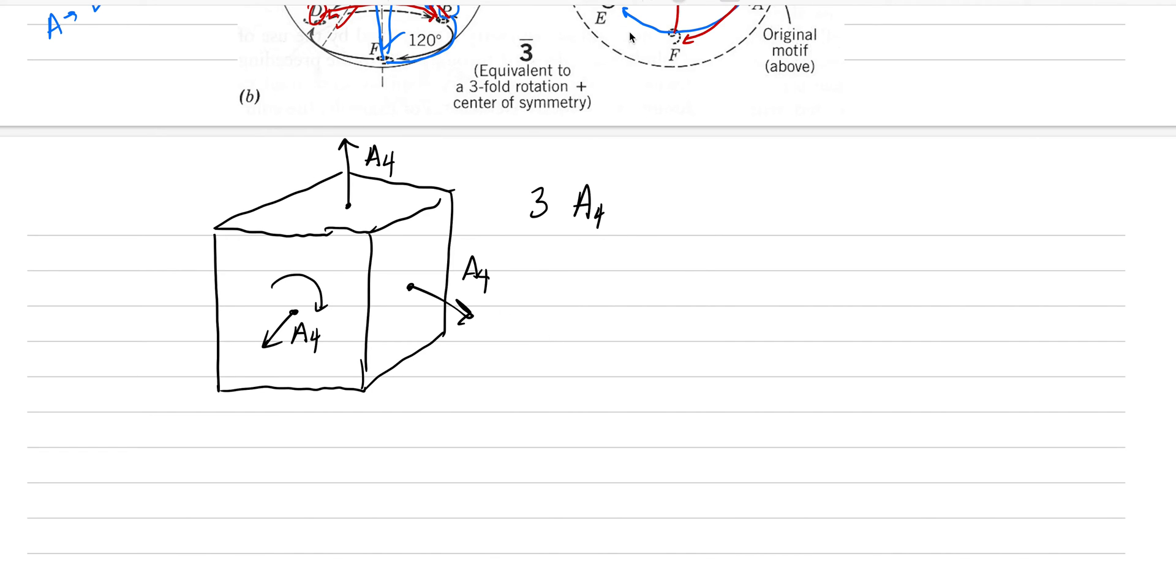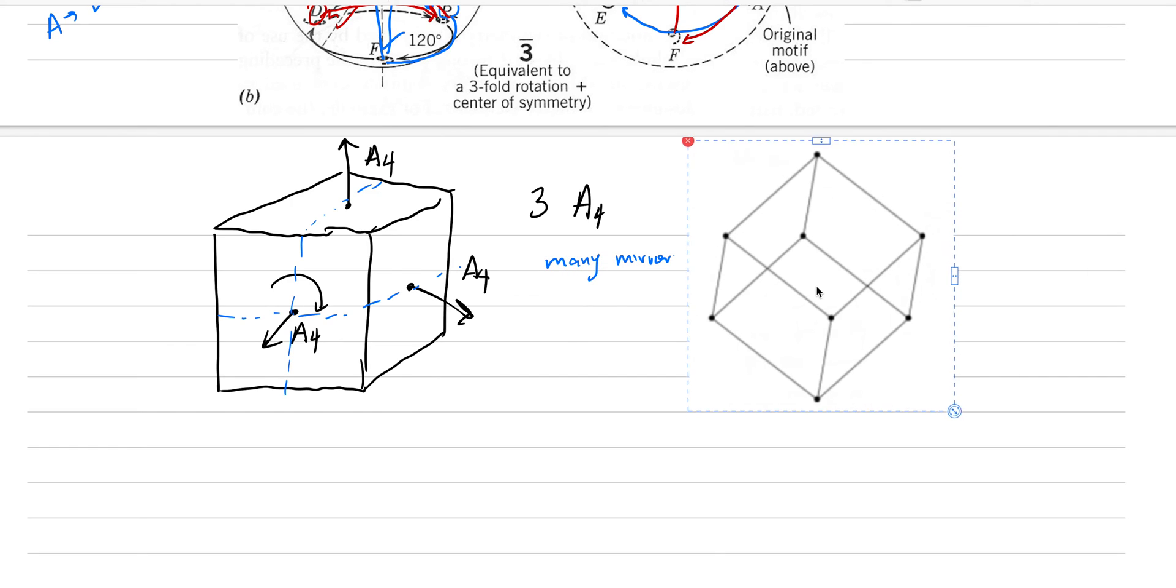And what about mirrors? There's going to be a ton of mirrors in a cube. There's one example, and here's another example. There's many mirrors in a cube. But this lesson is about rotoinversions, and your eye probably doesn't see one obviously. The reason for that is it's not oriented the correct way. This is a little harder to draw, so I'm just going to pull in an image.